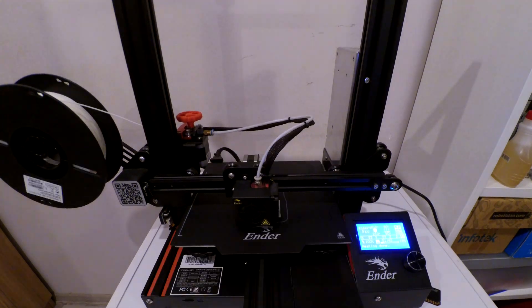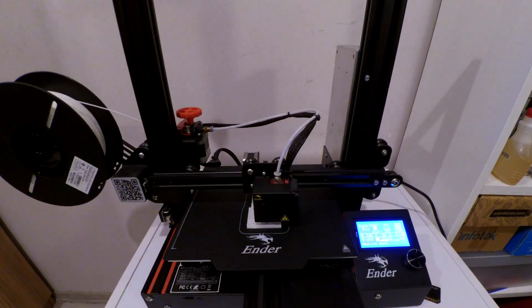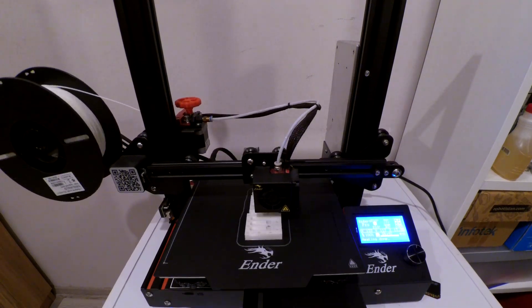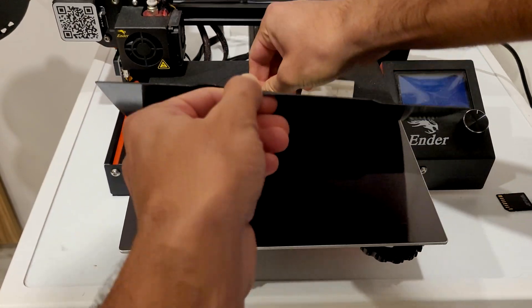For the print, I use the lowest layer heights that I can. This way, it takes longer. But I'm hoping the silicon will be easier to remove from a smoother mold. Okay, the print is done. Let's see how the parts turned out.